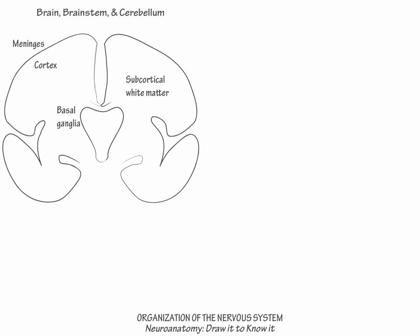Label the basal ganglia, which are most notably involved in motor function, but are also important for behavioral and cognitive functions. Then label the thalamus, which in combination with the metathalamus, relays most of the afferent information that enters the brain.